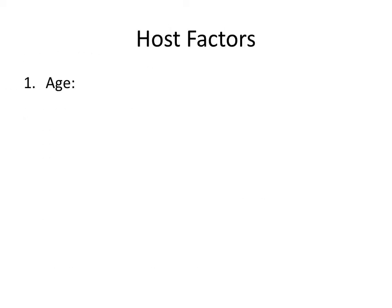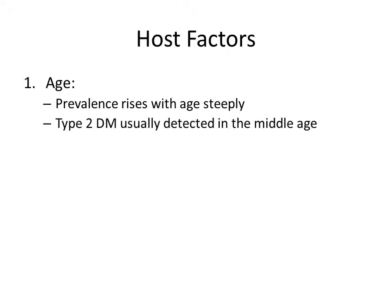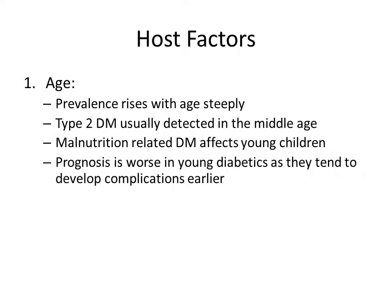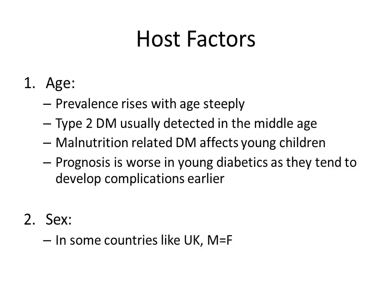Host factors: Age — the prevalence of type 2 diabetes rises steeply with age and is usually detected in middle age, while type 1 typically occurs in the young. Malnutrition-related diabetes mellitus affects young children, and the prognosis is worse in young diabetics as they are exposed to hyperglycemia for a longer time and tend to develop complications earlier. Sex — in some countries prevalence is equal between genders, but in South East Asia more male diabetics are seen than female.